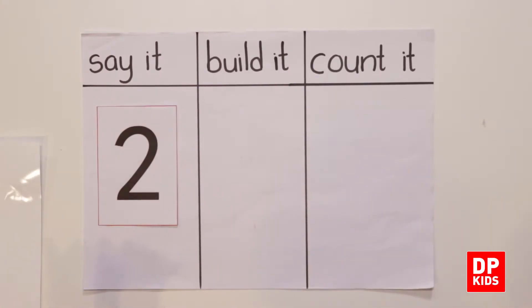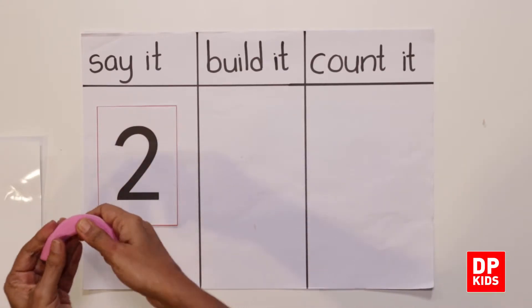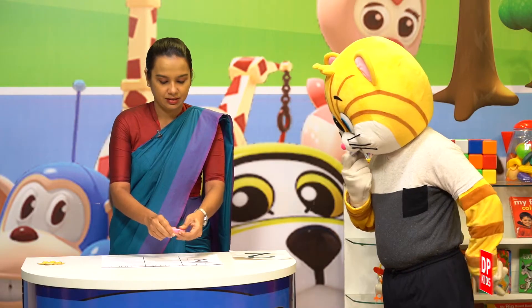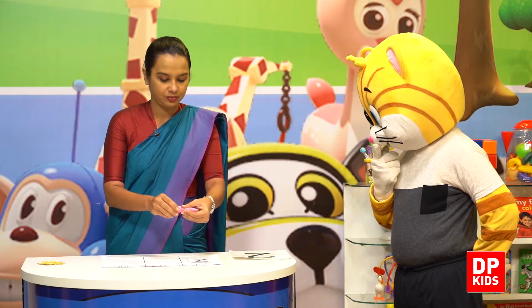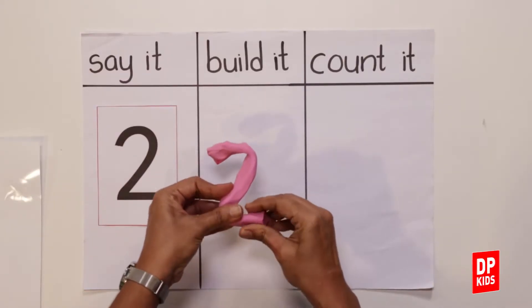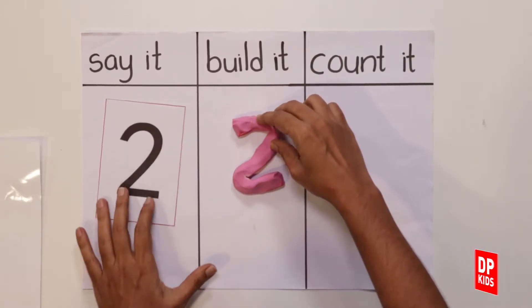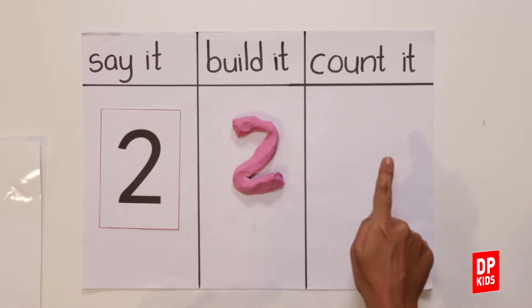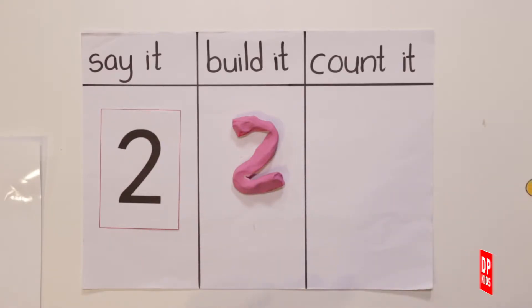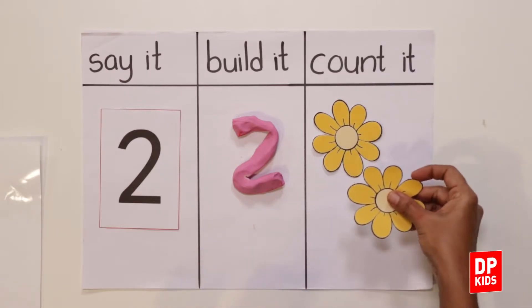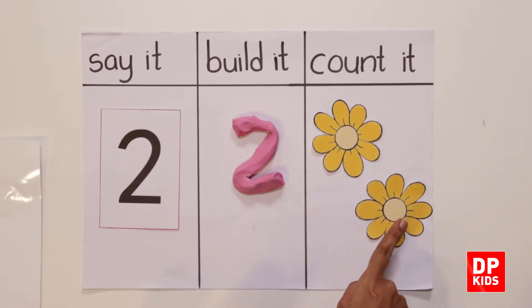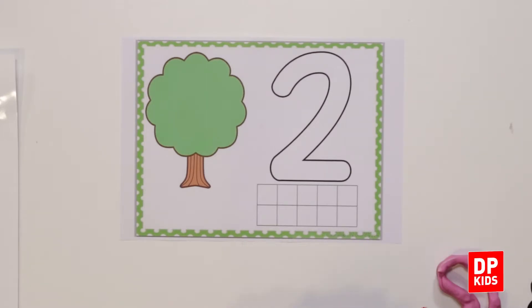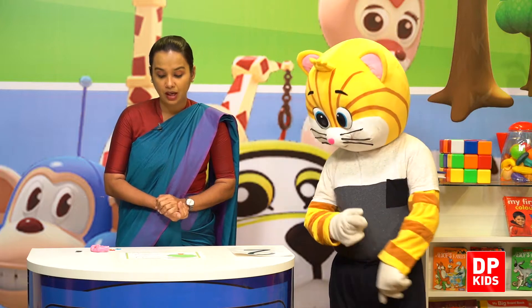Let's build it, Kiti. Build number two. Let's see how we are going to build two and fill the ten frame. Let's count — one and two.